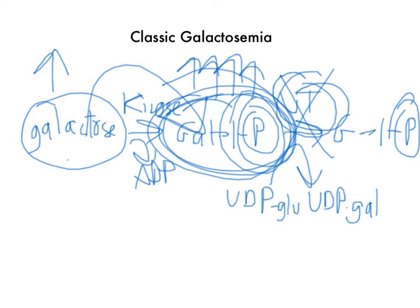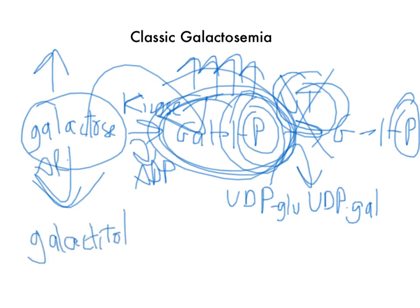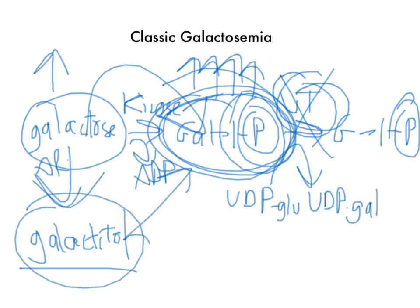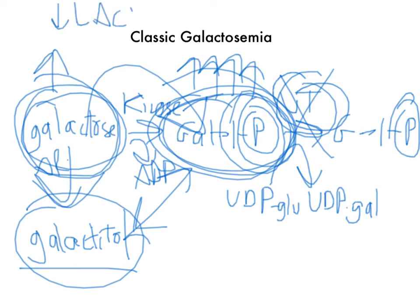As a result, the infant will have not just infantile cataracts but also mental retardation, failure to thrive, jaundice, and hepatomegaly. The aldose reductase reaction still occurs, producing galactitol and contributing to the cataracts. Treatment involves excluding galactose from the diet, and also decreasing lactose intake, because lactose is broken down into galactose and glucose — so removing lactose is another way to reduce galactose levels.